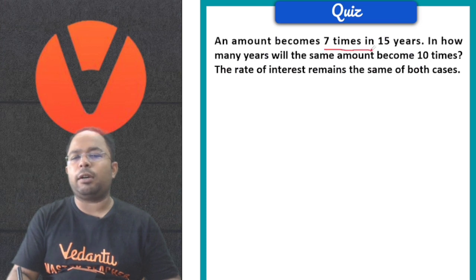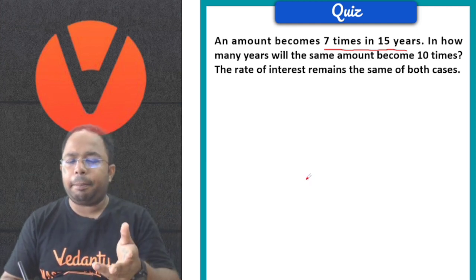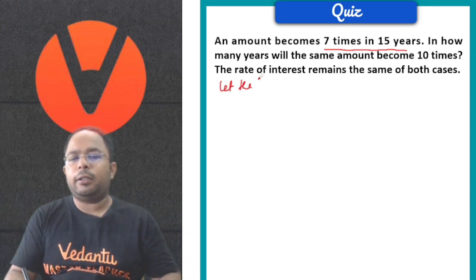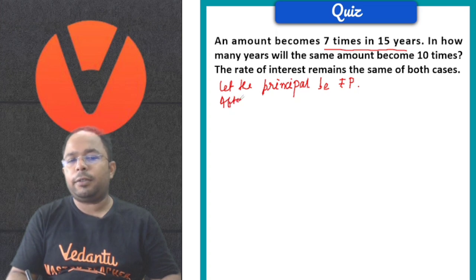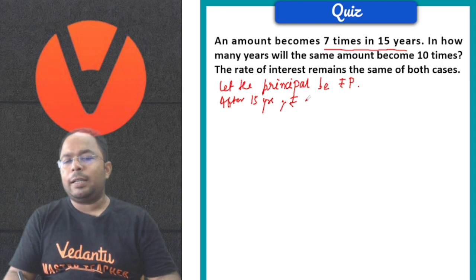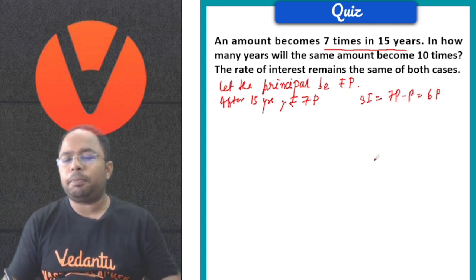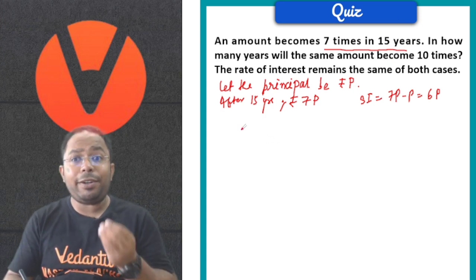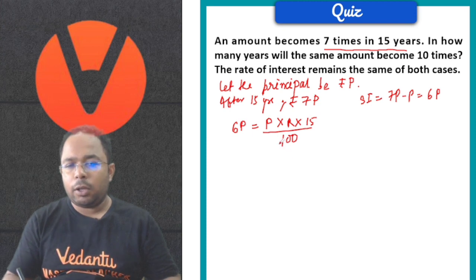The question is that the amount will be 7 times in 15 years. We don't know how much the principal is, so let the principal be P. After 15 years the amount was 7P. So Simple Interest = 7P − P = 6P over 15 years. Putting into the formula: 6P = P × r × 15 / 100. P cancels; solving gives r = 40%. That is our rate of interest.